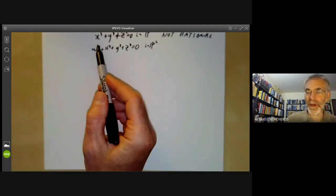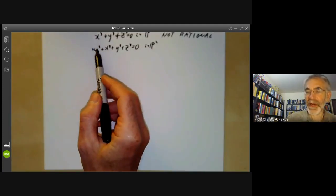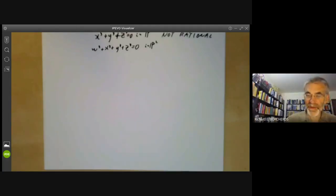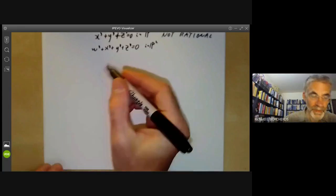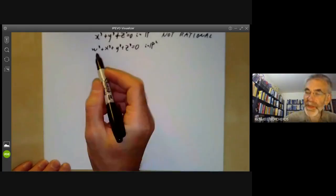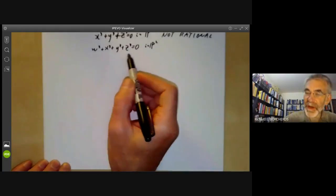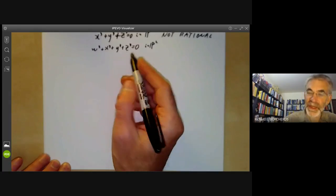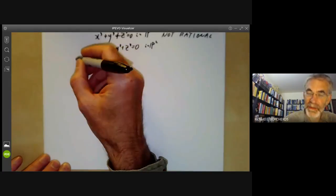There's no reason why a section of a rational surface needs to be rational. In fact, this is rational. I'm going to give two arguments for this. The first one is we observe that this contains two non-intersecting lines.